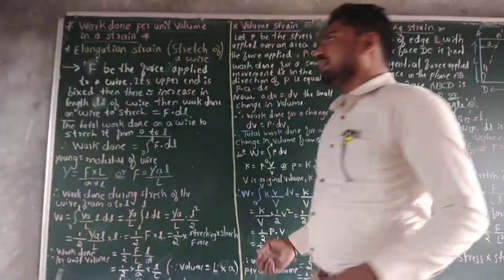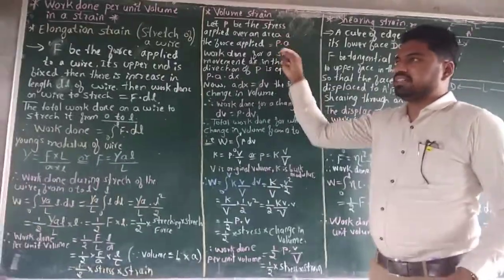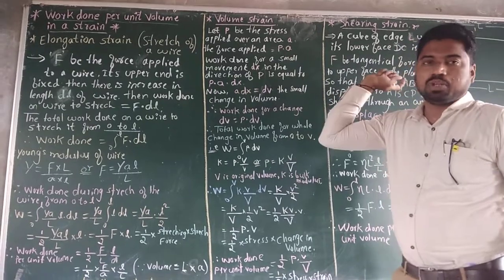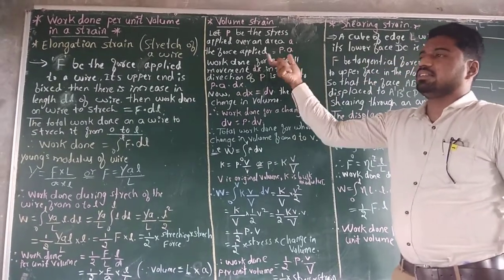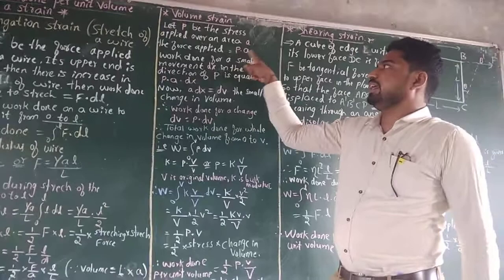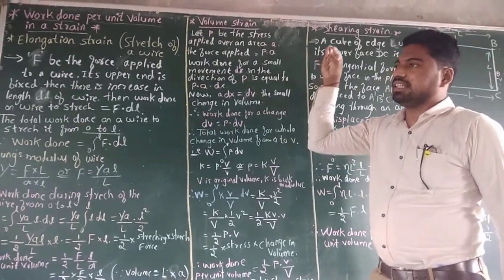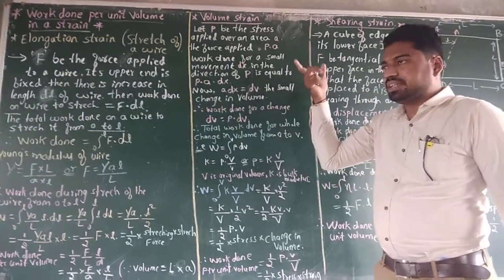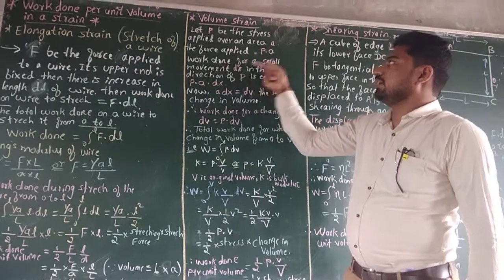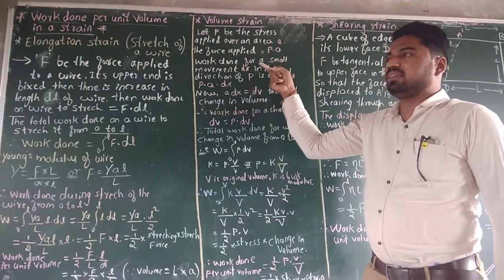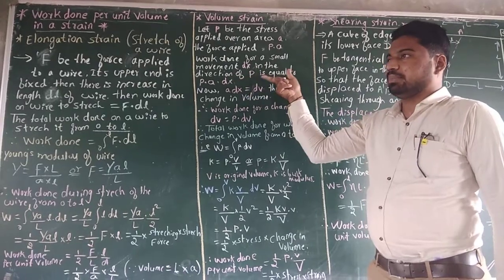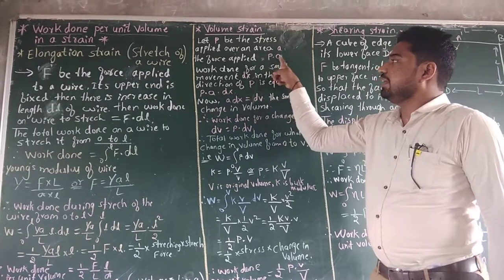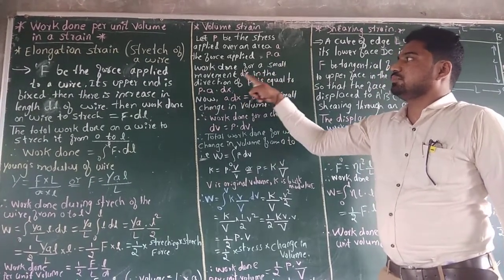Next, volume strain: suppose you take P as the stress applied to a body of area A. Then the force applied is F equals P into A. When you apply the force to the body there is a change in volume, and work done occurs. For a small displacement Dx in the direction of stress P, work done equals P·A·Dx.